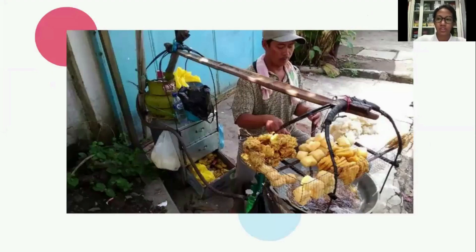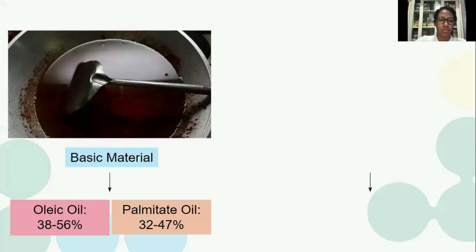We all love fried food, including me. You can be sure that cooking oil is used for frying not only once or twice a day, but many times. Meanwhile, cooking oil that is used more than twice is not good for health, and if it is thrown away, it can potentially pollute the environment. So I have a solution, which is to use cooking oil as feedstock for biodiesel, because used cooking oil itself contains palmitate oil and oleic oil. The manufacture of biodiesel is divided into two stages, namely esterification and transesterification.